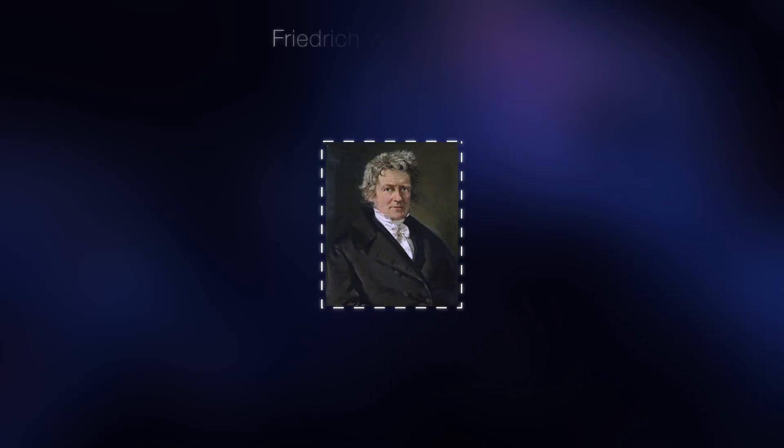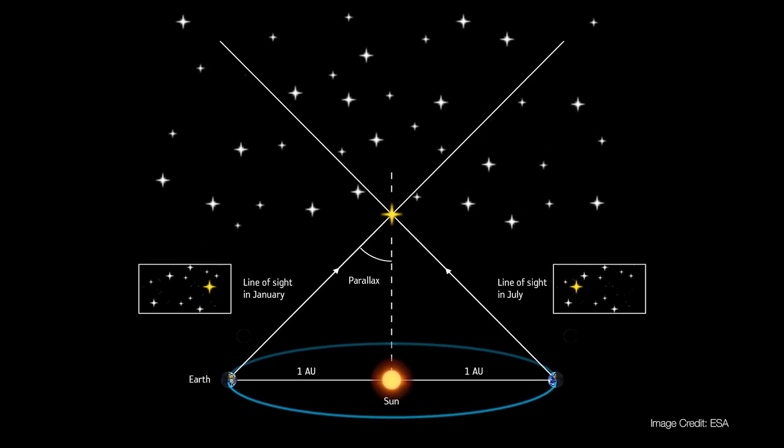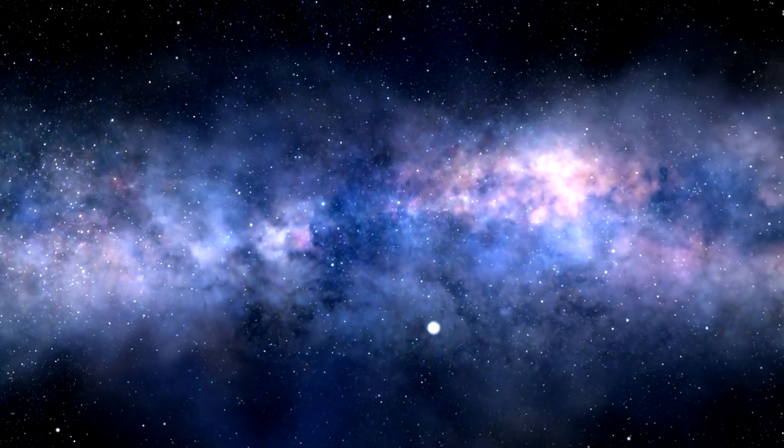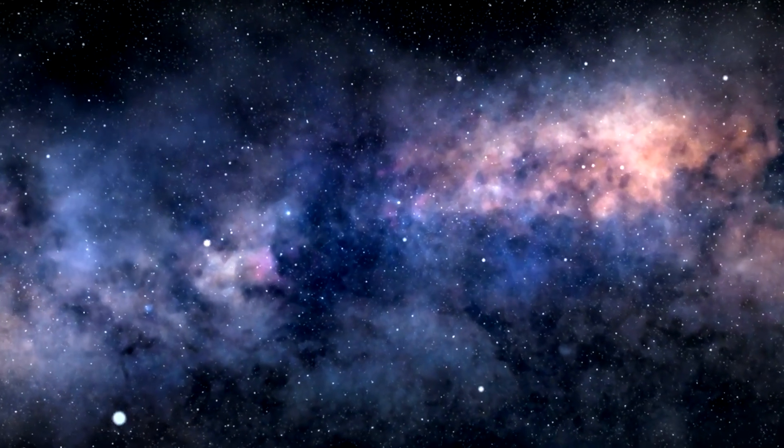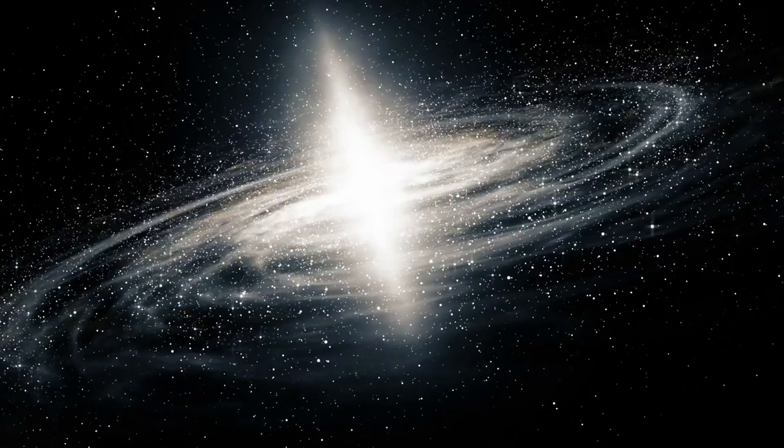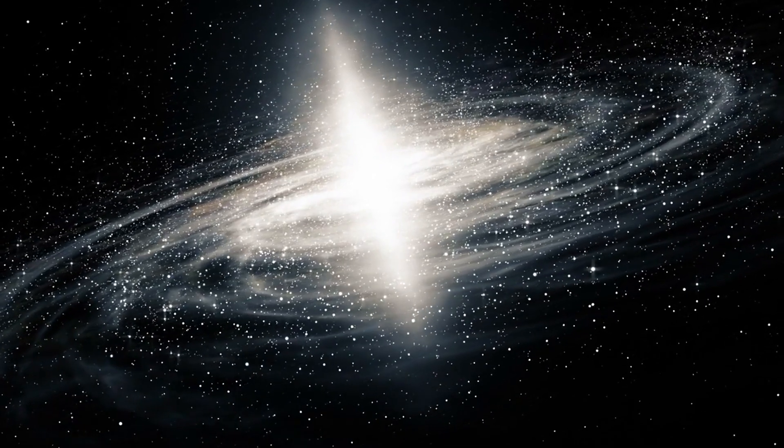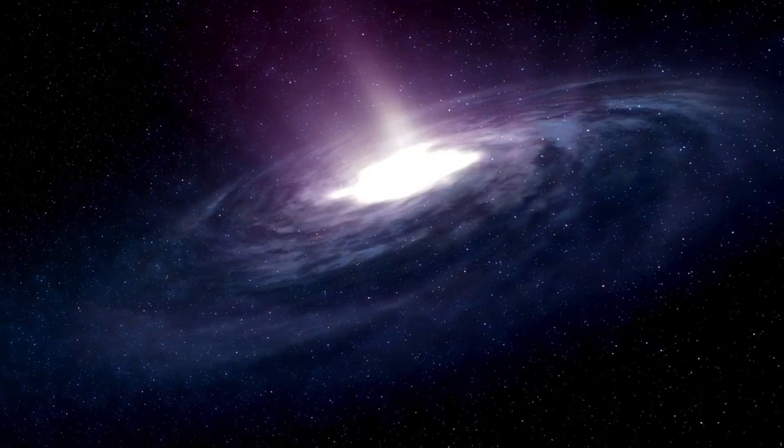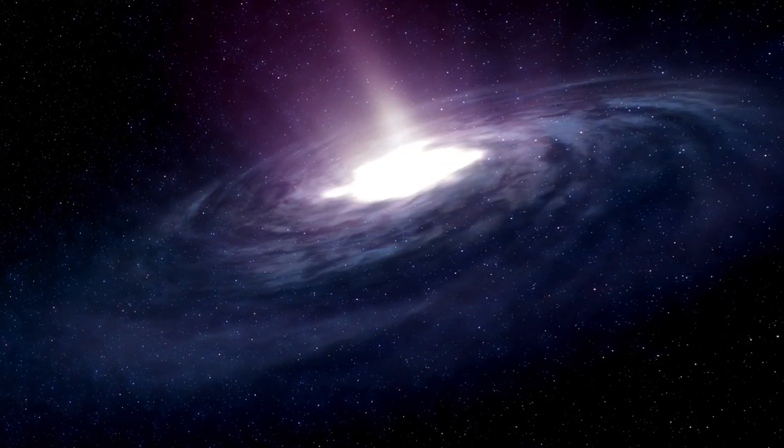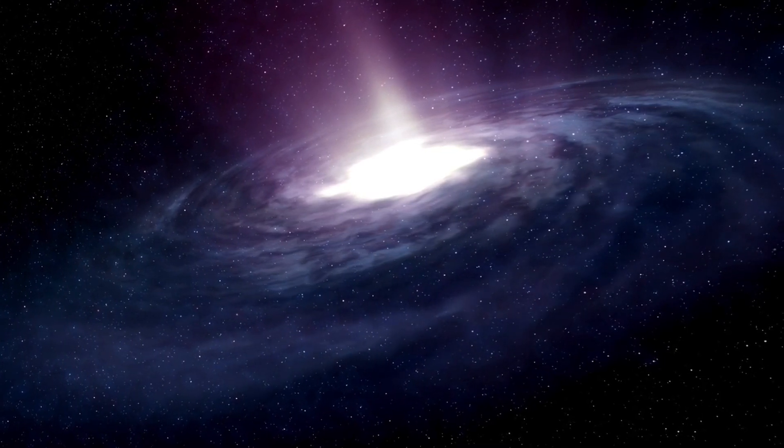Following the barycenter, in 1838, Friedrich Bessel successfully measured stellar parallax for the first time, a key method for determining the distances to stars. This measurement provides a way for assessing the position of our solar system relative to the rest of the galaxy. This is essential for mapping out the trajectory and speed of our solar system as it orbits the Milky Way.